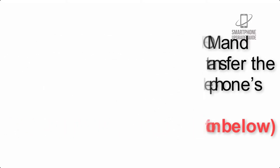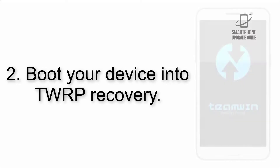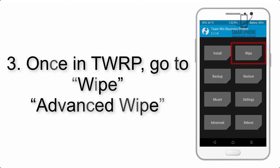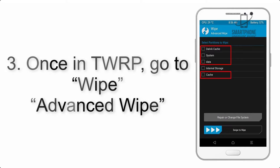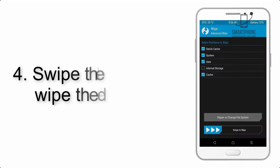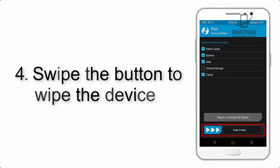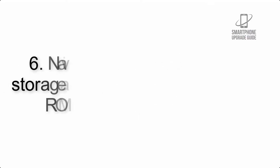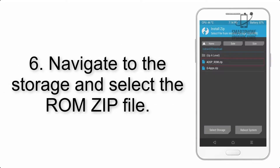Step 2: Boot your device into TWRP recovery. Once in TWRP, click on Wipe, then Advanced Wipe, and select the checkboxes as shown in the image, excluding internal storage. Step 4: Swipe the button to wipe the device.